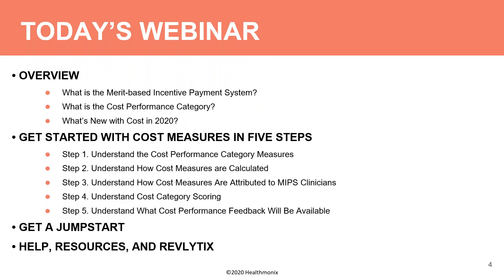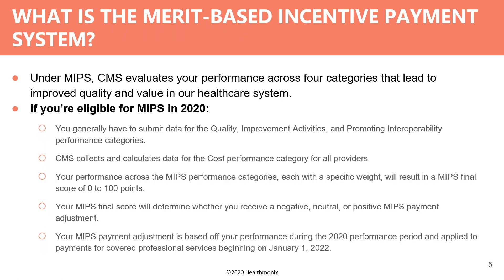Today we're going to cover: what is the Merit-Based Incentive Payment System or MIPS; what is the cost performance category; and what is new in costs in 2020. We'll walk through a five-step process covering how cost measures are calculated, attributed, scored, and what cost performance feedback will be available, plus how our new product Revlytics can help with your MIPS cost category.